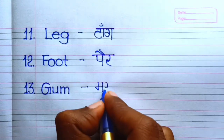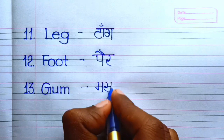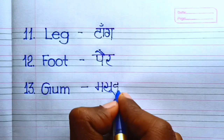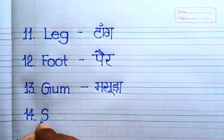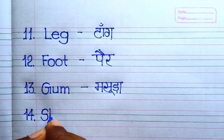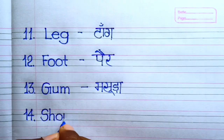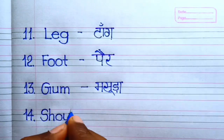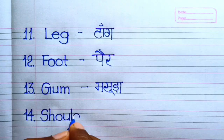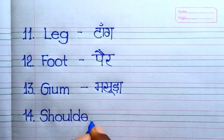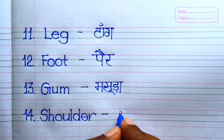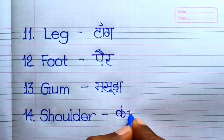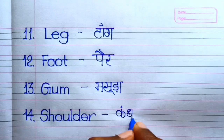Number 13. Gum — Gum means masooda. Number 14. Shoulder — Shoulder means guns.